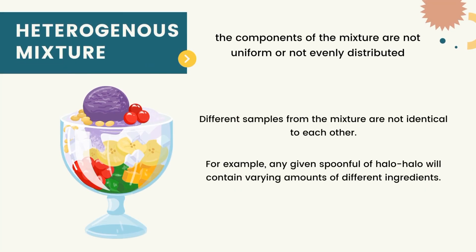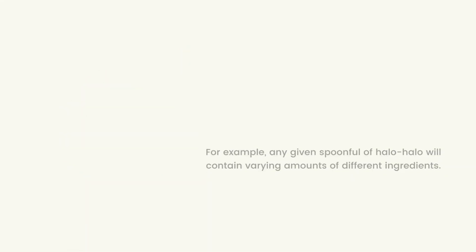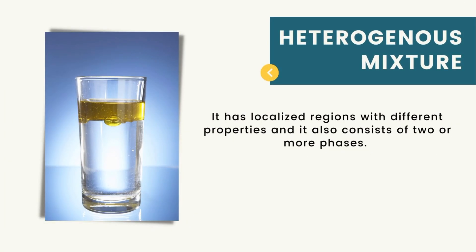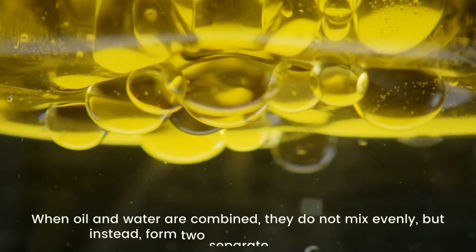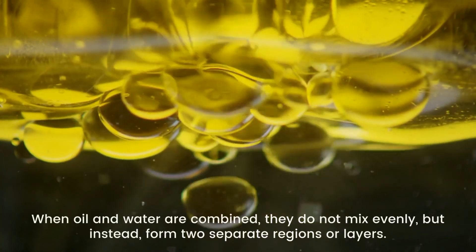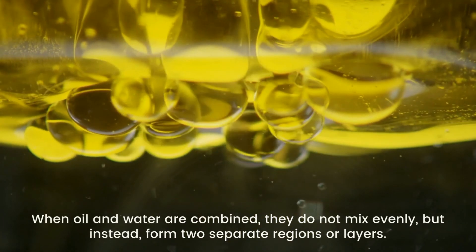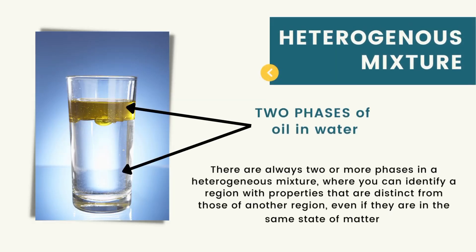On the other hand, a heterogeneous mixture is a mixture in which the components are not uniform or not evenly distributed. Different samples from the mixture are not identical to each other. For example, halo-halo is a heterogeneous mixture — any given spoonful will contain varying amounts of different ingredients. A heterogeneous mixture has localized regions with different properties and consists of two or more phases. For example, when oil and water are combined, they do not mix evenly but instead form two separate regions or layers, each called a phase. There are always two or more phases in a heterogeneous mixture, where you can identify regions with properties distinct from another region, even if they are in the same state of matter.